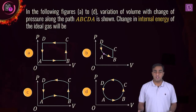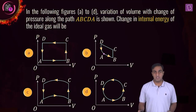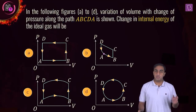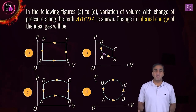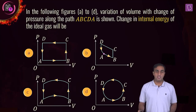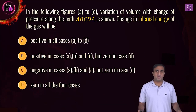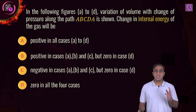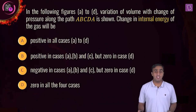In the given question, it is said that the ideal gas goes through four different cyclic processes and the corresponding pressure versus volume graphs are plotted as shown. We are supposed to choose the right option concerning the change in the internal energy of the gas for all these cyclic processes.